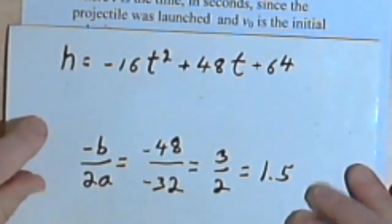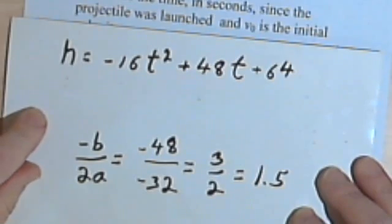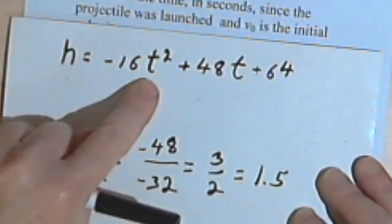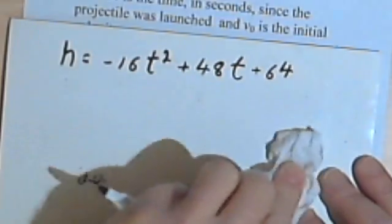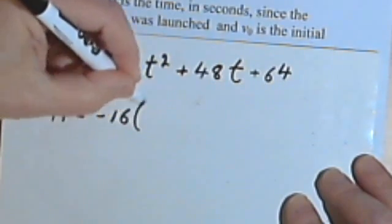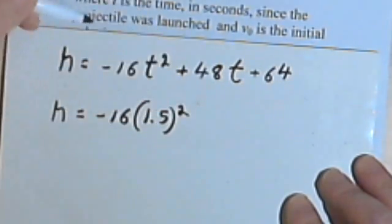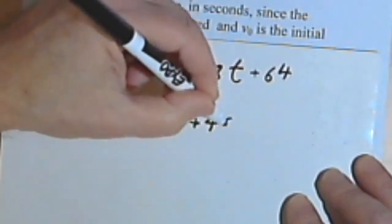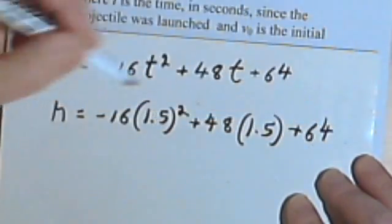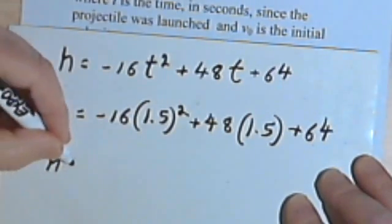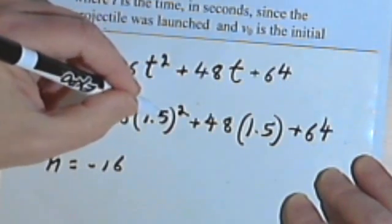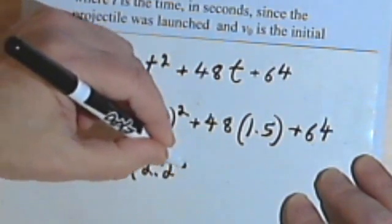Now it also asks me what the maximum height was. Well, the maximum height is going to be how high it was after 1.5 seconds. So let's just put 1.5 in wherever I've got a t. So the height is going to equal negative 16 times 1.5 squared plus 48 times 1.5 plus 64. Let's see what that comes to.